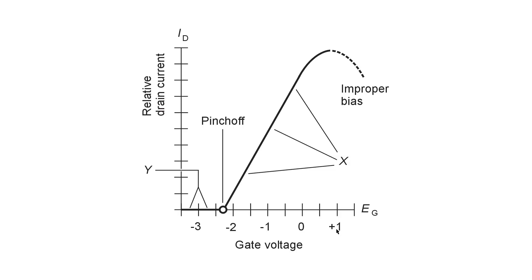A junction field effect transistor or JFET generally has, if it's an N-channel device, a fairly large positive voltage applied to the drain and rather smaller voltages applied to the gate that can be either positive or negative.